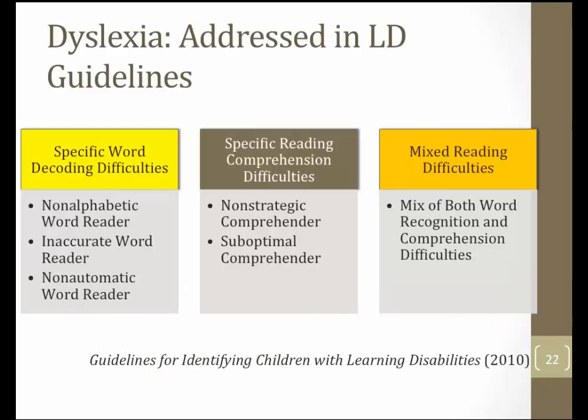When we think about reading disabilities among our learning disabled population of students, there are really three basic profiles that emerge, and these profiles have been supported by the literature base. The first profile is characteristic of students with dyslexia, our most common reading disability group — students with specific word decoding difficulties, described as non-alphabetic, inaccurate, and non-automatic word readers who lack automaticity at the word level and fluency at the level of connected text.